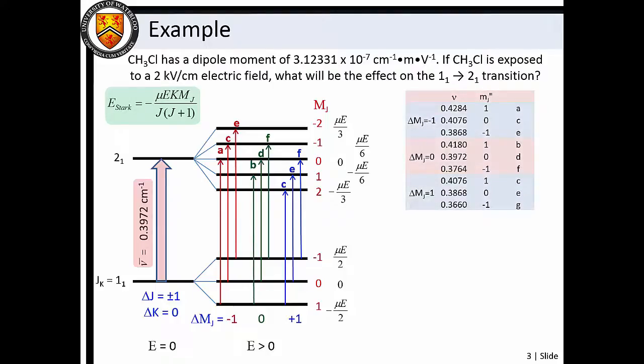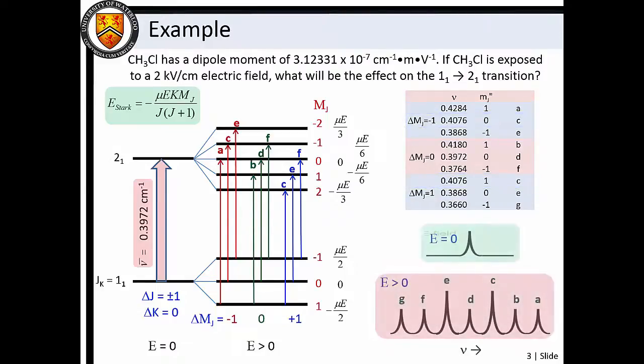However, calculation shows that two transitions coincide at 0.3868 reciprocal centimeters and another two coincide at 0.4076 reciprocal centimeters. Consequently, we find that the Stark effect gives rise to an interesting splitting pattern whereby two lines have twice the intensity of the other five.